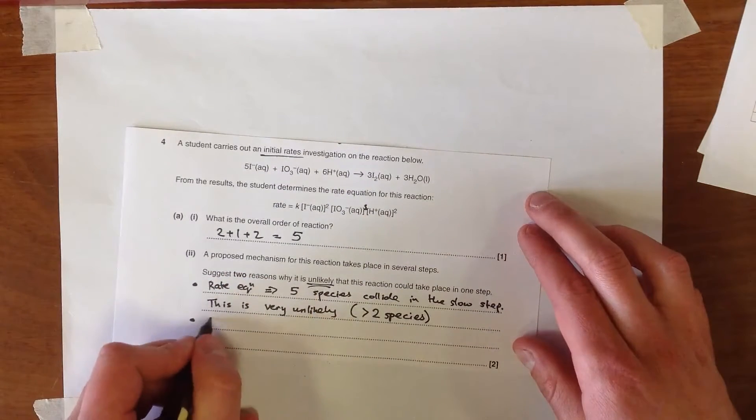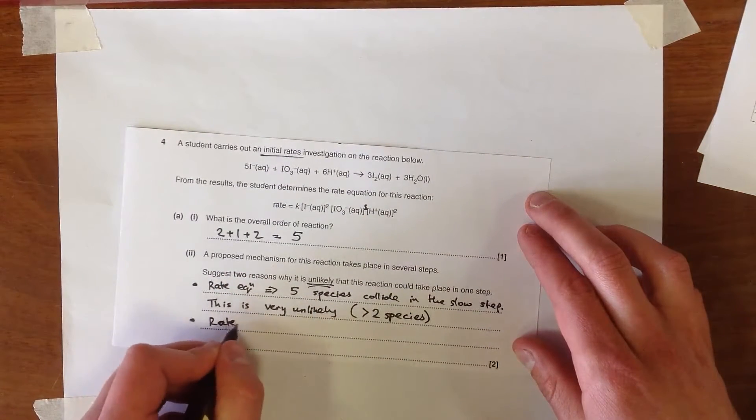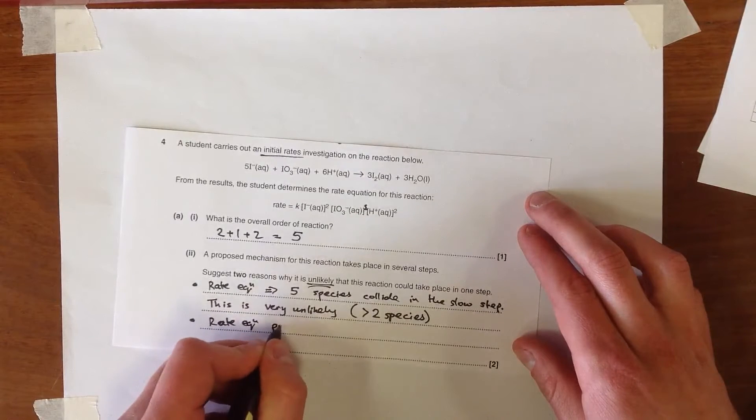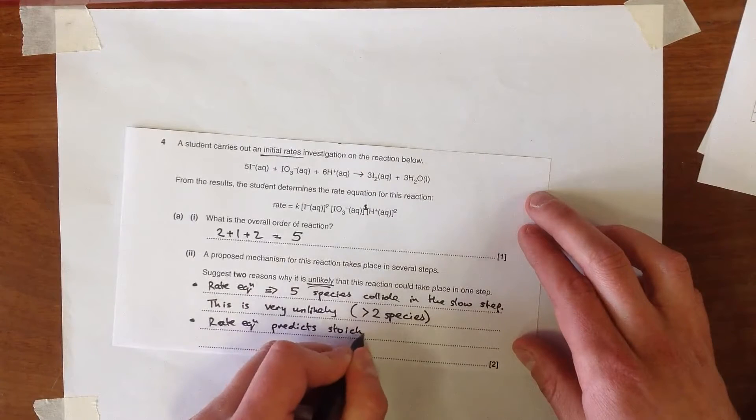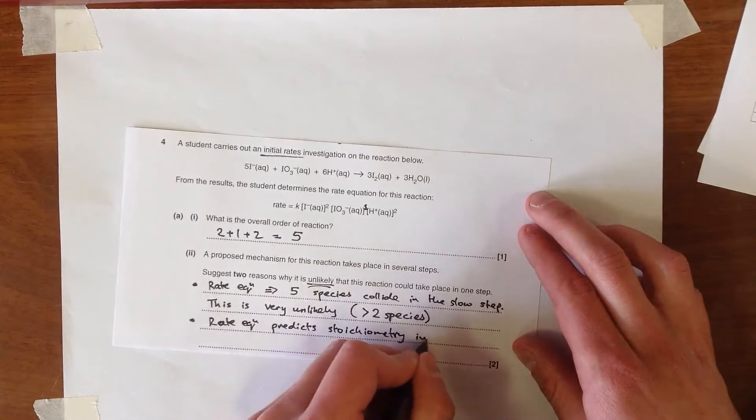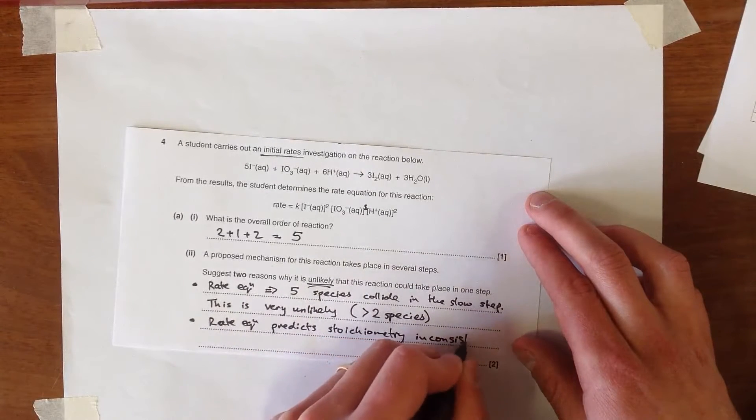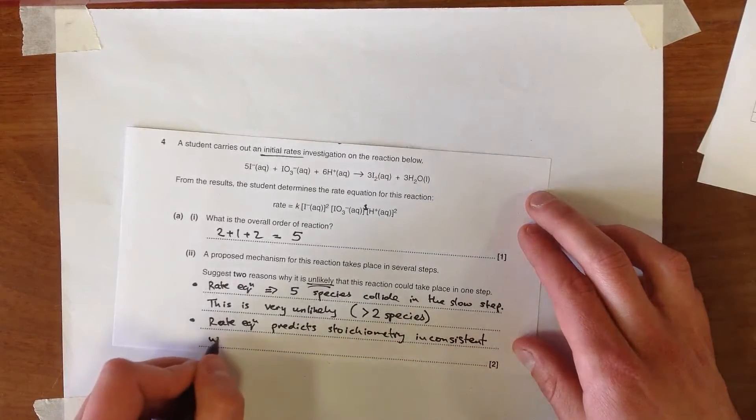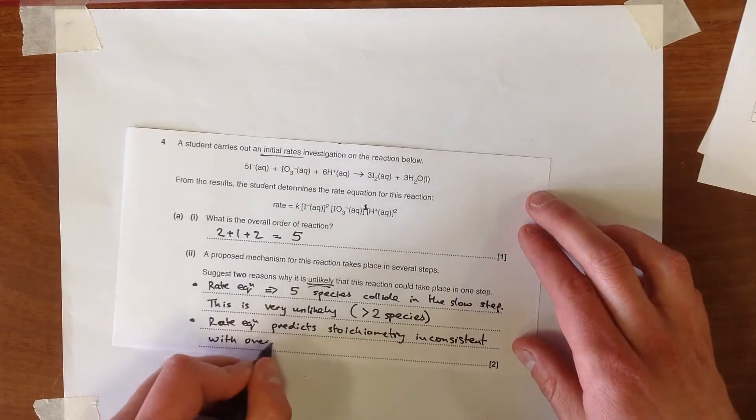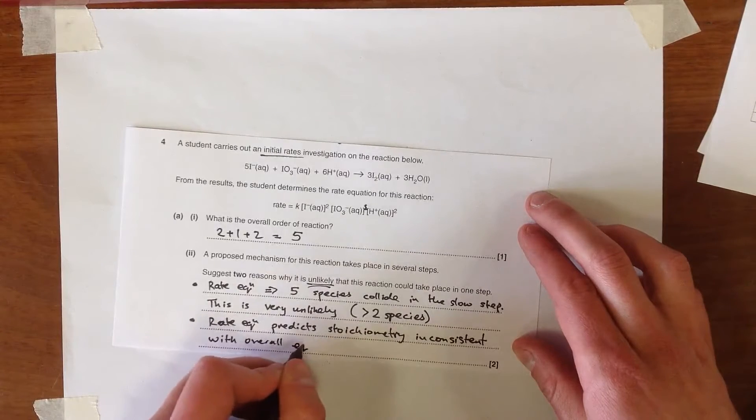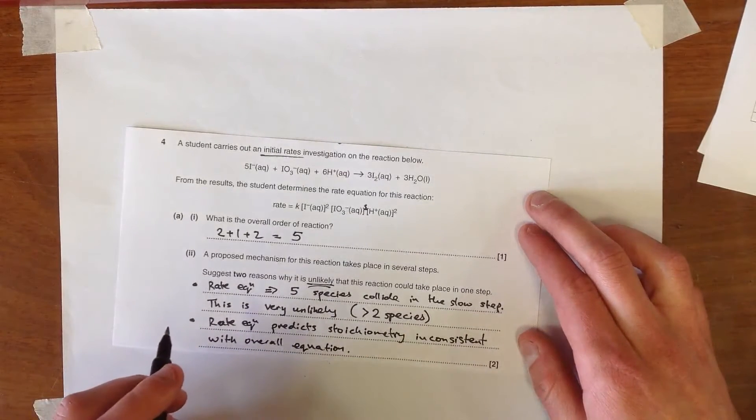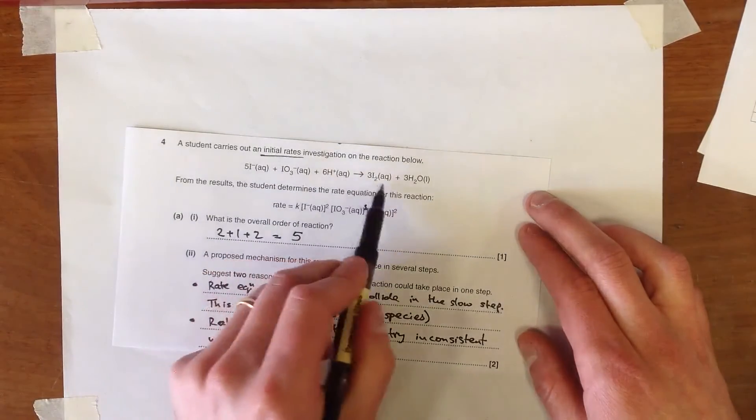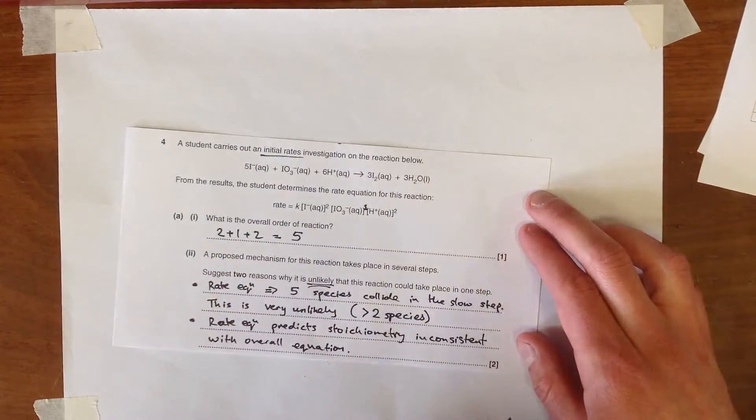And therefore rate equation predicts stoichiometry that is inconsistent with the overall equation. And therefore it's impossible to just take place in one step. It wouldn't be that reaction if this took place in one step.